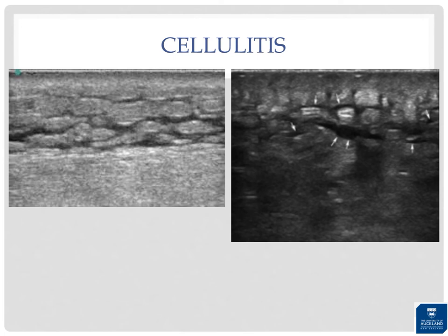The appearance of cellulitis varies depending on stage and severity. Initially, there's generalized swelling and increased echogenicity of the dermis and subcutaneous tissues. With progression, subcutaneous fluid accumulates, separated by hyperechoic fat lobules — commonly referred to as the cobblestone appearance. Note that this appearance is not specific and can also occur with generalized subcutaneous edema from conditions like CHF, so clinical correlation is important.